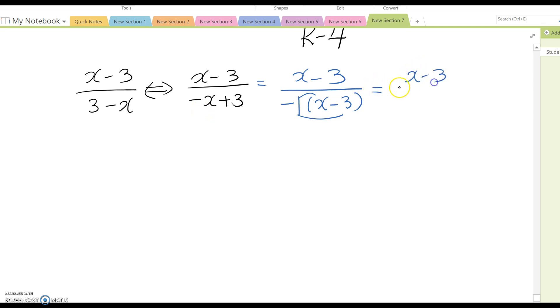We can rewrite this as x minus 3 over negative times x minus 3. Now you can cancel this out, so the answer becomes negative 1. Now, how can we think of a simpler way? You see x and 3, and 3 and x, in opposite signs.